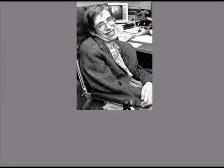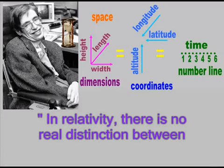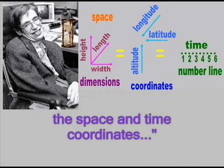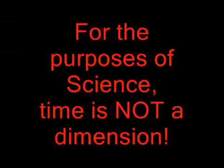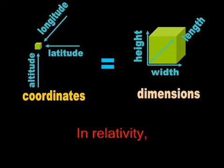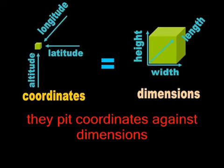More fundamental yet is Hawking's amusing claim that time is a dimension. In relativity, there is no real distinction between the space and time coordinates. This may be true in relativity; it certainly is not true in science. Therefore, it is not surprising when Hawking confuses coordinates with dimensions.